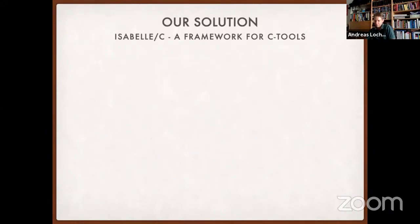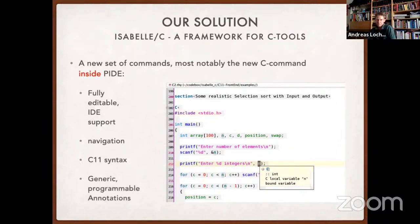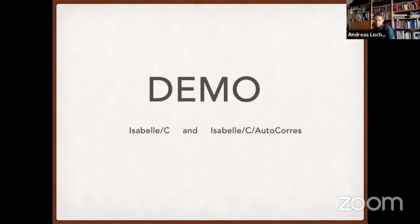Now I come to the heart of our solution. We introduced a new set of commands, most notably the new command 'C' inside PIDE. This looks like this: you have a C command and inside this text, which in an IDE-like fashion is immediately interpreted, parsed, annotated by colorations, etc. This is fully editable, allows navigation in this particular source, supports C11 syntax, and allows defining generic programmable code annotations. Here I start a demo.